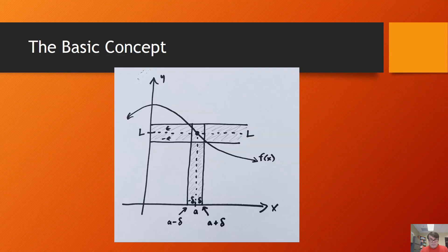Here's the basic concept. You have a nice little xy Cartesian coordinate graph. There's a function f of x. The limit as x approaches a — here's a, this represents an x value — as x approaches a, y is approaching a limit. This is the limit, the y value, the f of x value. This point represents the limit of f of x as x approaches a.